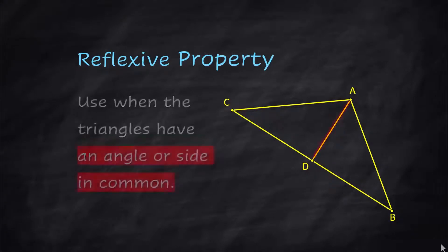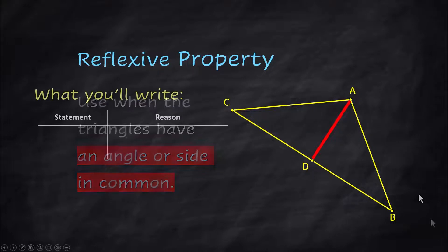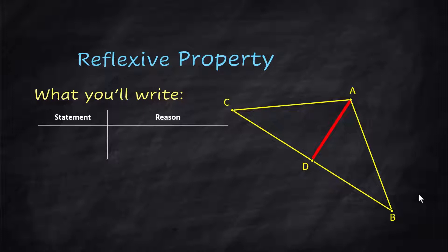Reflexive property. Use this when the triangles have an angle or a side in common. Talking about this side right here, they have in common, but there's two separate triangles here. But this side is equal to itself. This isn't like an entire proof. This is how you will talk about the reflexive property when you have to use it in a proof.